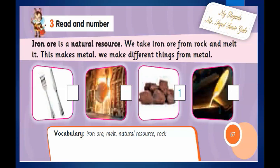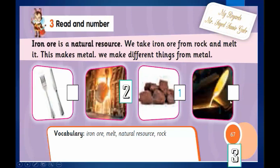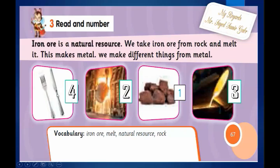Read and order: iron ore is a natural resource. We take iron ore from rock and melt it — this makes metal. We use metal to make different things, such as forks and spoons.